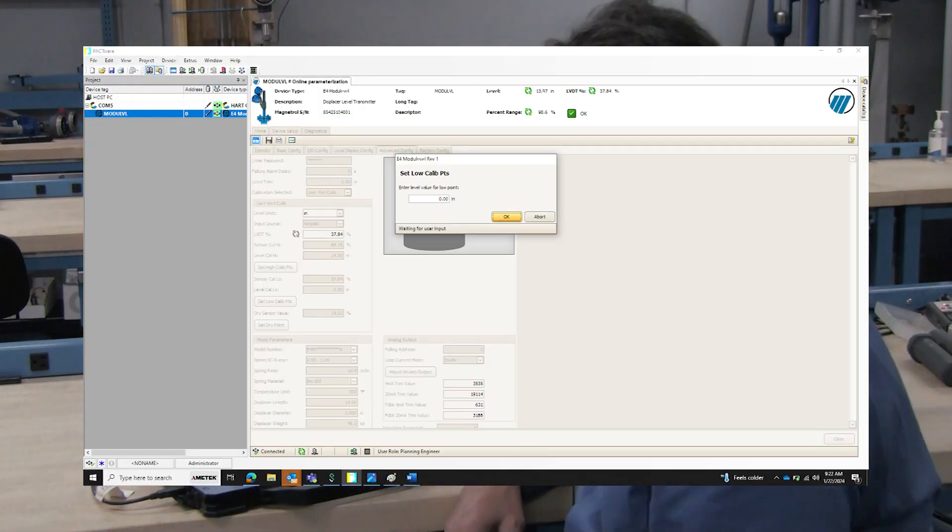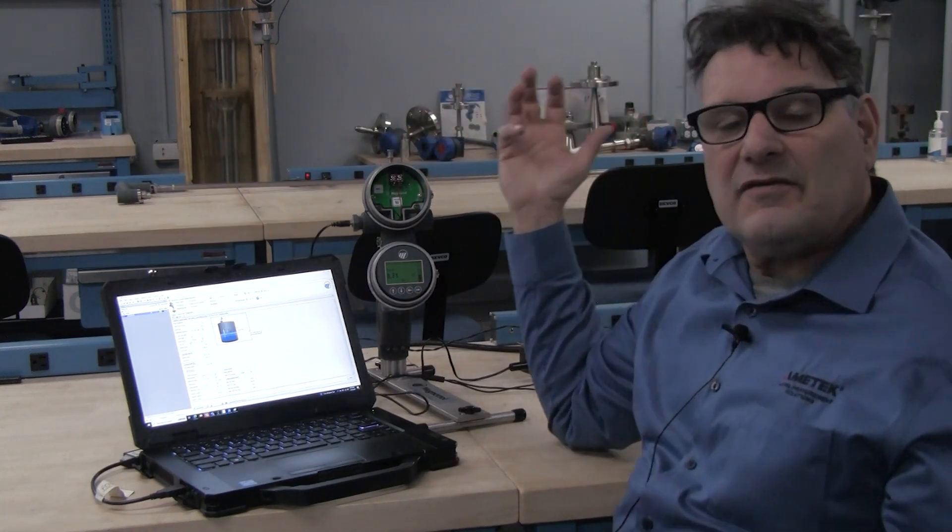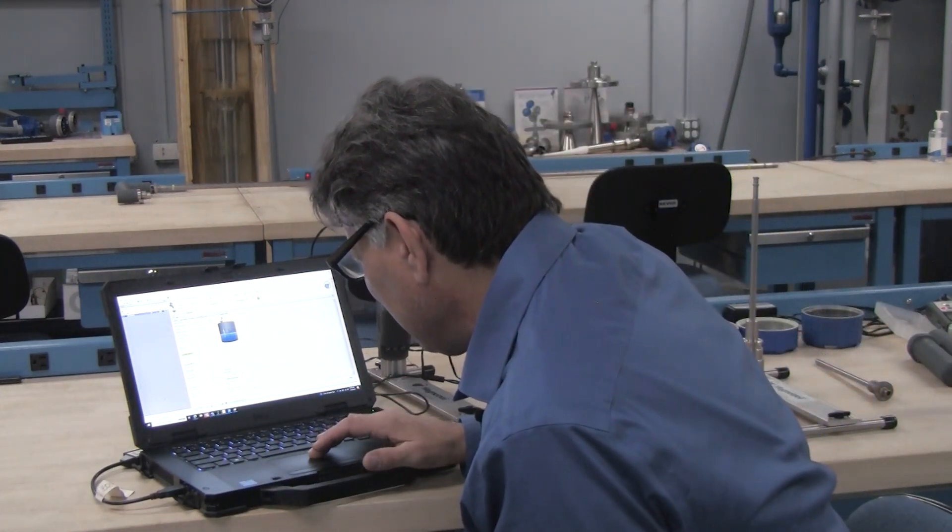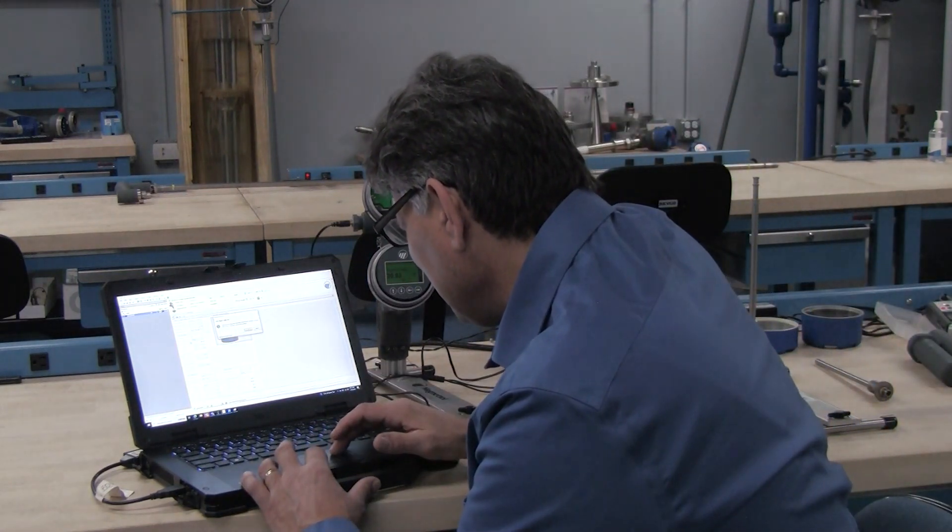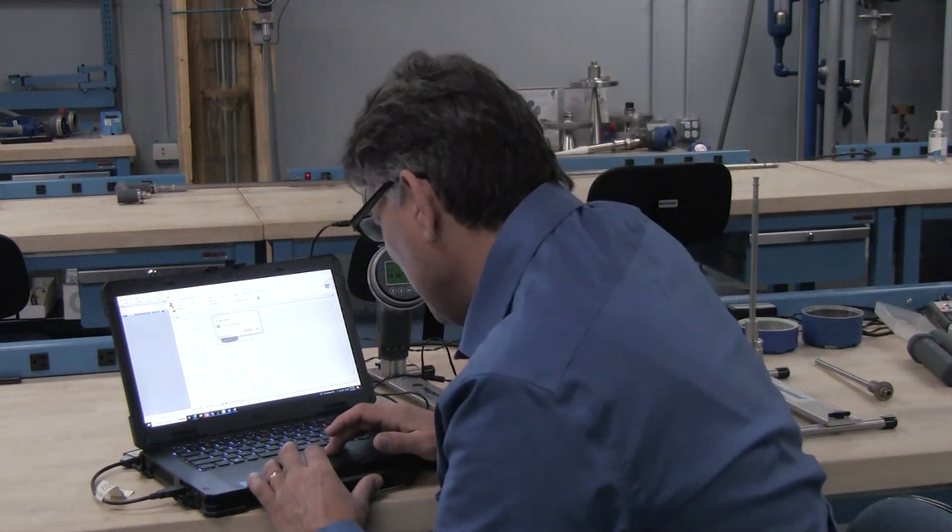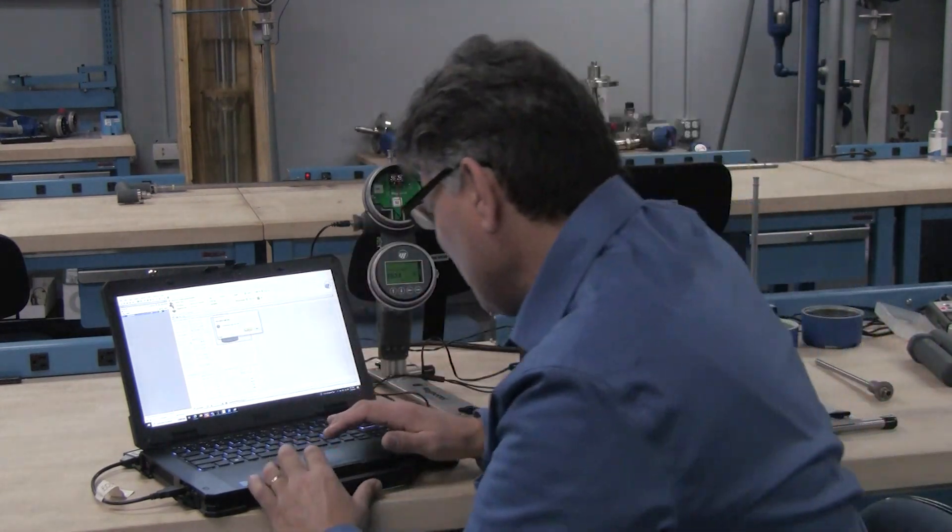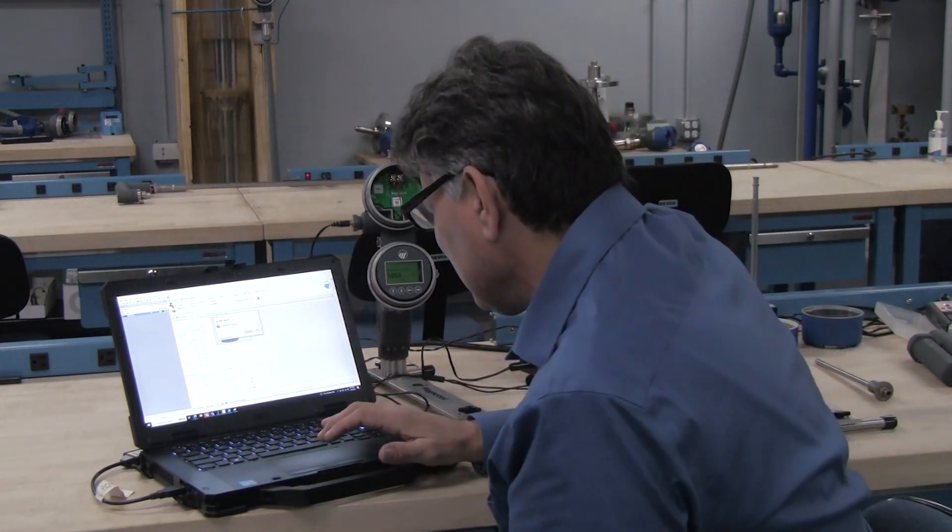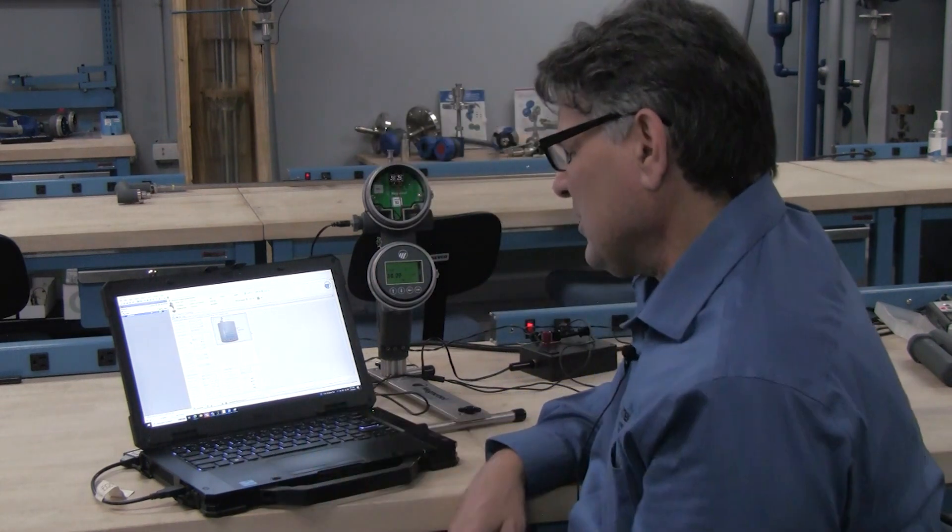Now I can lift this up simulating a high level or a higher level on the actual displacer. And now we'll go in and set my high point. And it'll ask me the same questions for the high point. And I'll go ahead and scroll through these. It gives me my percentage that the LVDT is at. I'm going to say yes.